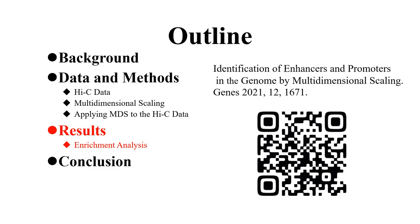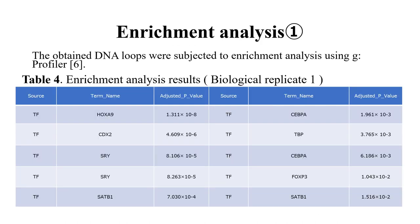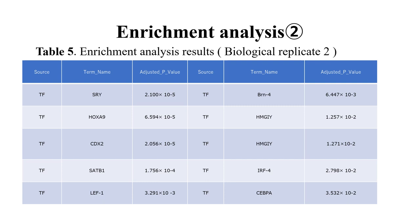Finally, results — enrichment analysis. Enrichment analysis is an analysis that explores the characteristics and trends of gene lists. In all Hi-C data, our method obtained transcription factors related to DNA loops. In this table, we obtained transcription factors involved in DNA loop formation such as SATB1 and TBP. This is the result of Biological Replicate 2, and the results were similar to Biological Replicate 1.